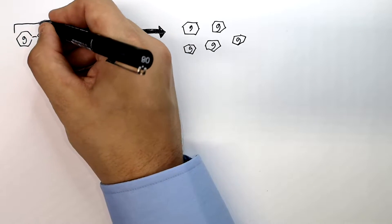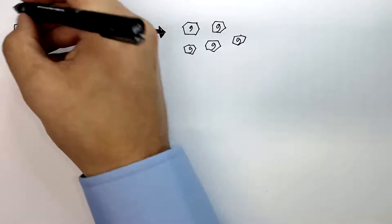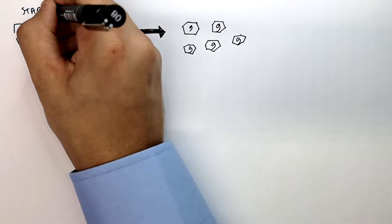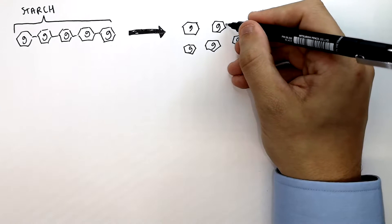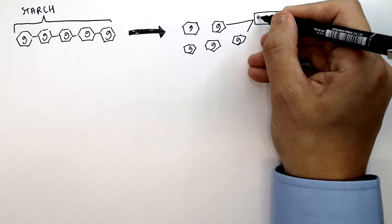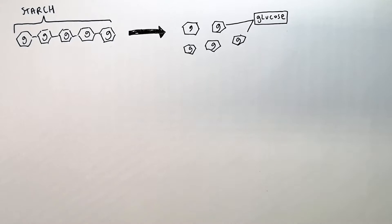This here is a molecule of starch, the polymer starch. Starch is a carbohydrate and it's broken down into glucose molecules which is used by the body for respiration.